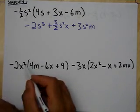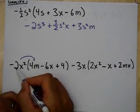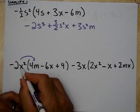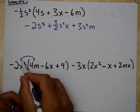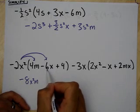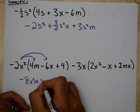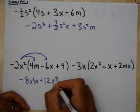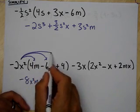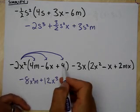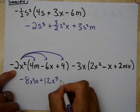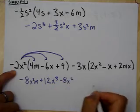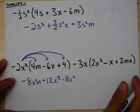Let's do another one here. Negative 2x squared times 4m, I get negative 8x squared m. Negative 2 times negative 6x. Well, negative 2 times negative 6 gives you my positive 12. x squared times x is x cubed. Negative 2x squared times 4. Well, negative 2 times 4 is negative 8x squared.